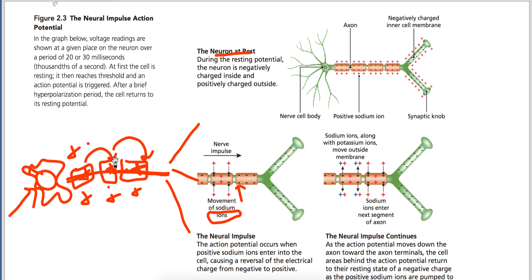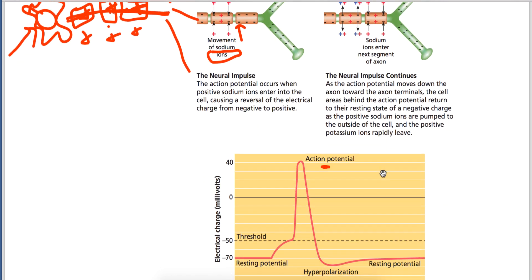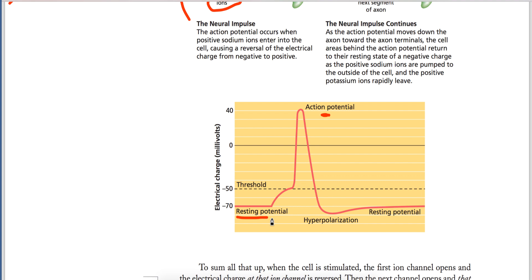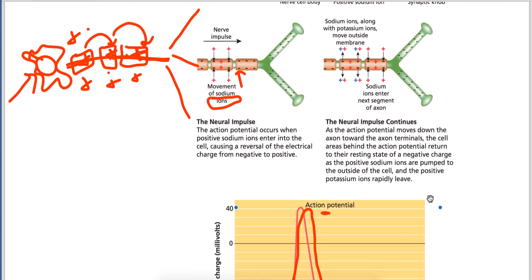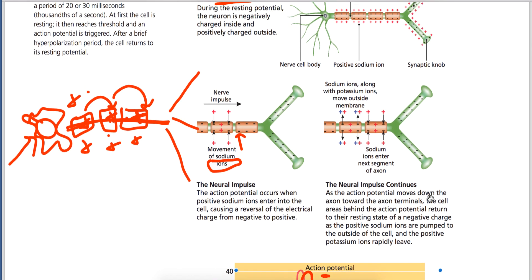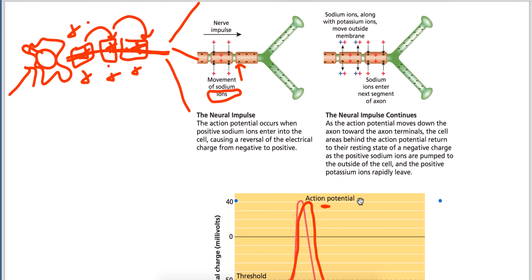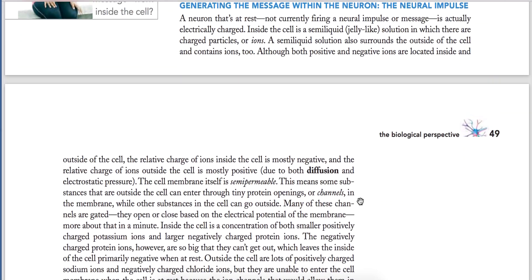This is shown in a graph. The neuron is at resting position — there is a negative charge. As the signal is generated and the action potential occurs, there is a positive charge. Then it returns to resting potential and there is negative charge again. When a neuron is resting, it is electrically charged but with a negative charge.